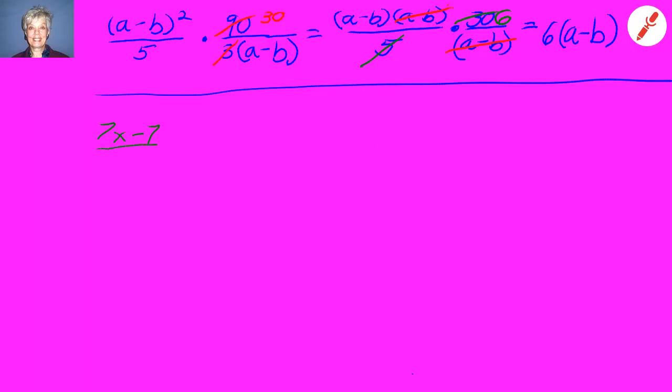We'll have 7x minus 7 over 5x plus 5 times 4x plus 4 over 10x minus 10. Now we're going to factor all of these. The numerators and the denominators can be factored by the greatest common factor. Seven is the greatest common factor in the numerator of the first fraction, five is the greatest common factor in the denominator of the first fraction, four is the greatest common factor in the numerator of the second fraction, and ten is the greatest common factor in the denominator of the second fraction.